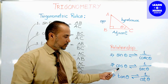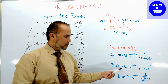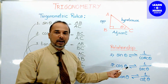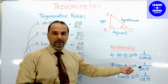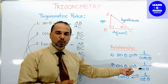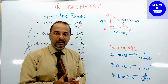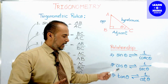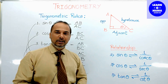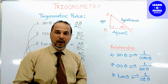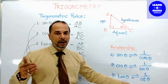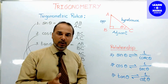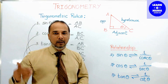Similarly, cos theta is in an inverse relation with sec theta. So cos theta equals one upon sec theta, and sec theta equals one upon cos theta. The last one: tan theta and cot theta have an inverse relation — tan theta equals one upon cot theta, and cot theta equals one upon tan theta.